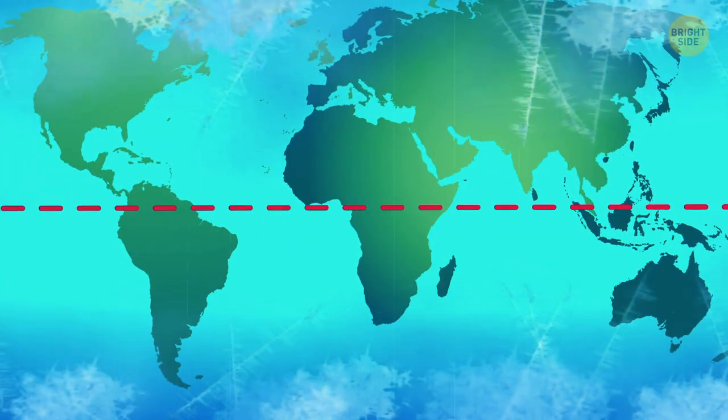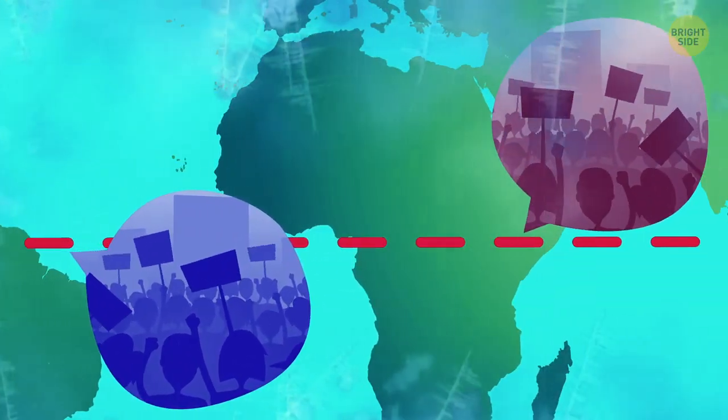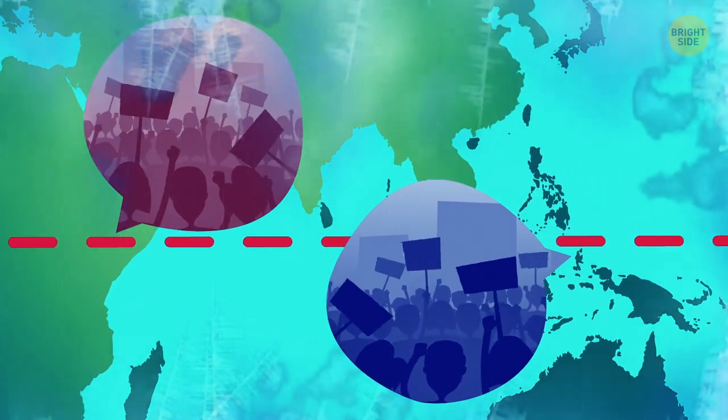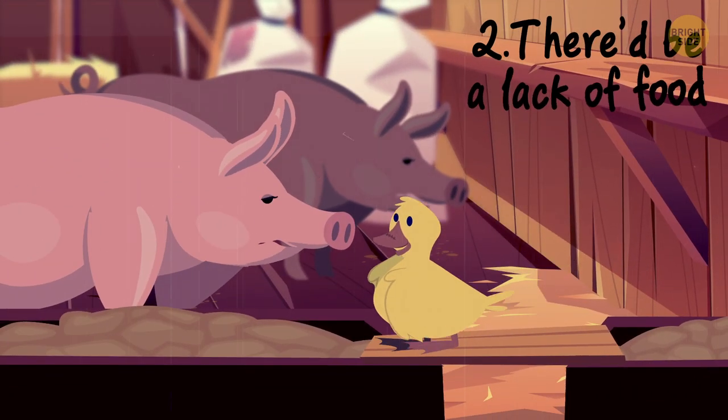Everyone would probably move toward the locations near the equator where it'd be the warmest. This would cause overpopulation, the spread of diseases, and lack of resources. Well, let's delve deeper. Two: There'd be a lack of food.